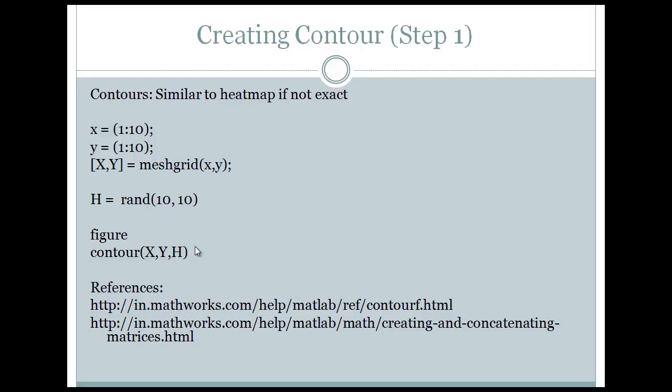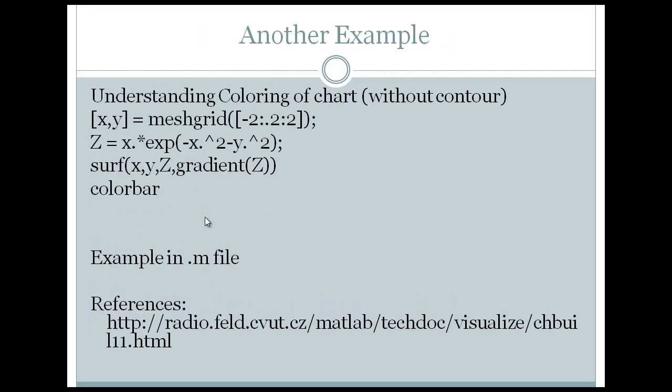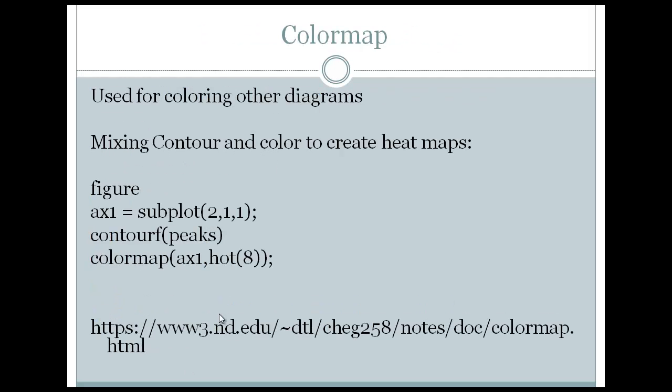After we have created the contour, we can then fill it with color. If you don't remember contour, you can go back to mesh grid. Mesh grid will have the Z axis as per the size of the function that is given here, and you will have a gradient surface of Z. Then you can use color bar to draw this up, so I'll show you this example.